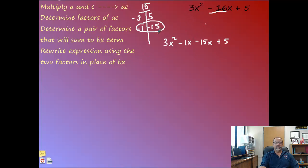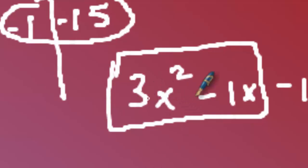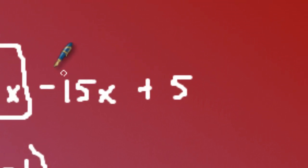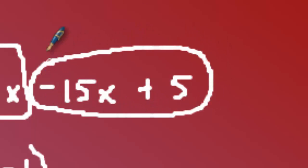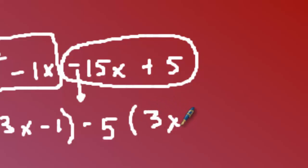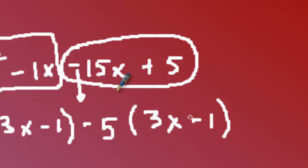Now factor the first two terms: 3x² − x. What's common? I can factor out an x, leaving x(3x − 1). Then factor the second two terms: −15x + 5. The sign stays the same, so that's minus. The common factor is 5, giving −5(3x − 1). Be careful with that negative sign — since negative 5 times negative 1 must give positive 5, both signs inside must be negative.